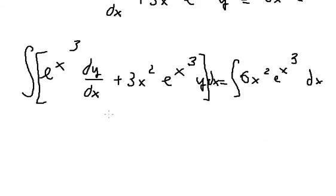So on the left, we got about e^(x³) times y. On the right, we got about 2e^(x³) plus C.